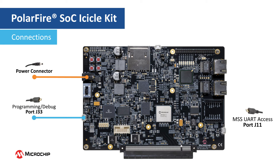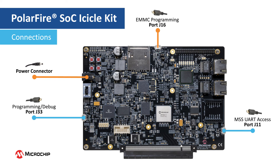To access the MSS UART connections, connect a microUSB cable to port J11 on the right of the board. To program the eMMC, connect a microUSB cable to port J16 at the top of the board. All of the connections are shown here.